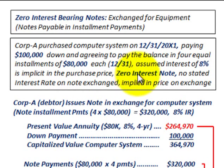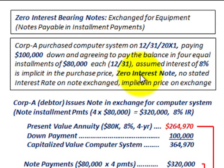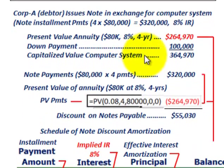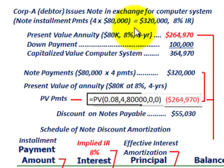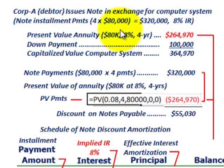We're looking at a zero interest bearing note where there's no stated rate of interest on the note exchanged, but the interest is implied in the price. The note calls for four payments of $80,000 each, and there was also a $100,000 down payment to purchase this computer system. We need to determine the capitalized value of this computer system and the interest that would be charged on this note.